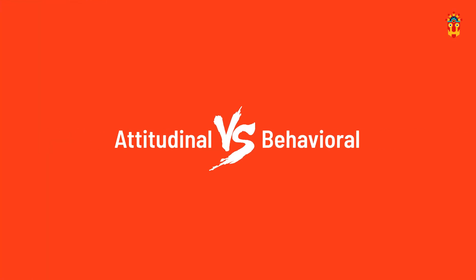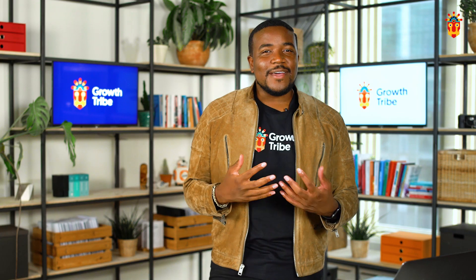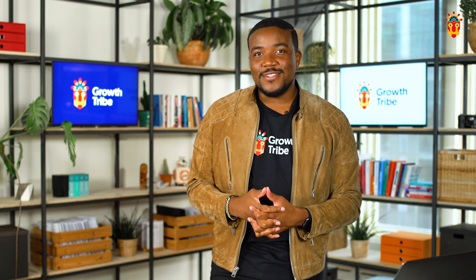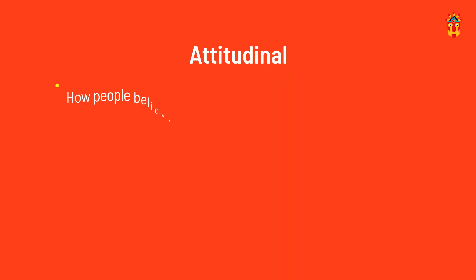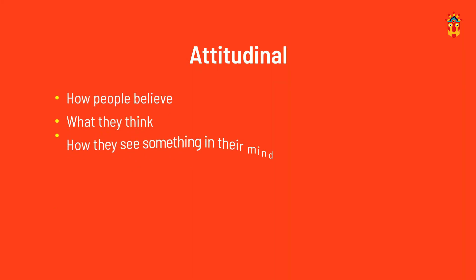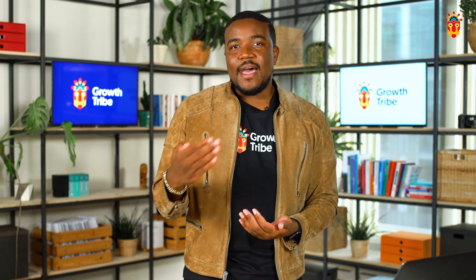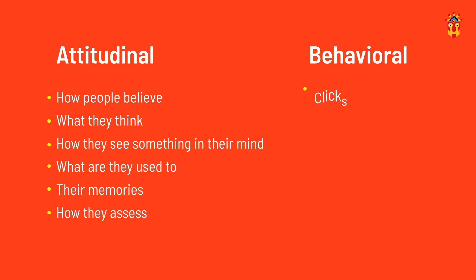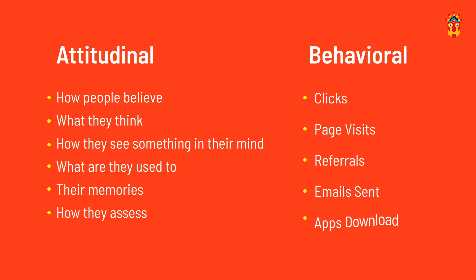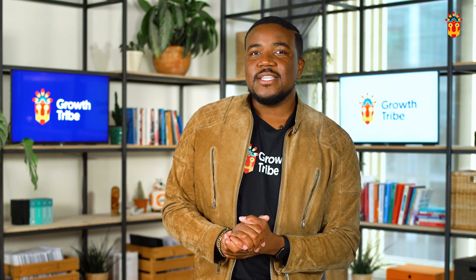For pair number two, we talk about attitudinal versus behavioral. You ever know that phrase, actions speak louder than words? This is all about that. Attitudinal is how people believe, what they think, how they see something in their mind, what are they used to, their memories — this is about how they assess, not really what they do after that assessment. Whereas behavioral is the actual actions they take. We can track and measure the clicks, the pages they've gone to, the number of referrals, emails sent, apps downloaded. And these things really tie back to quantitative usually.